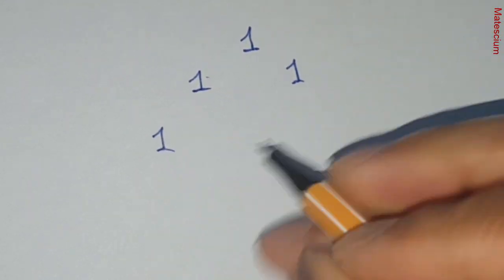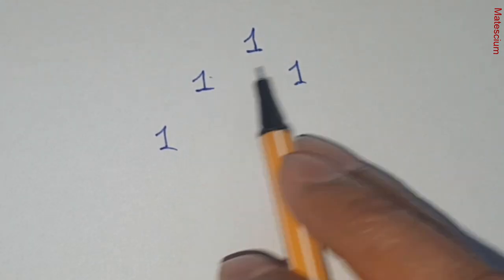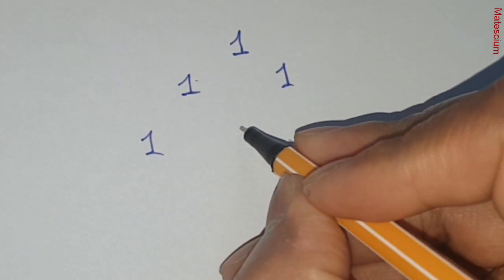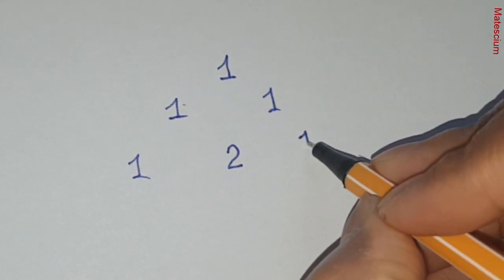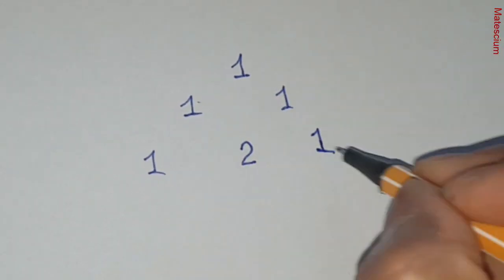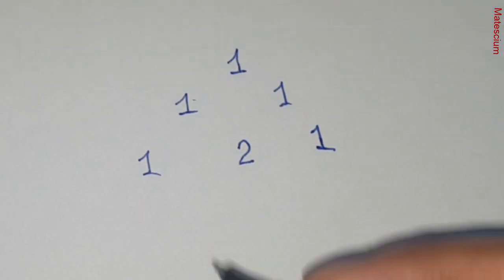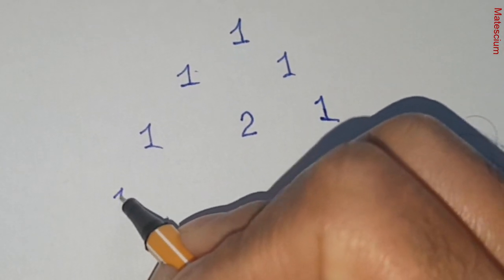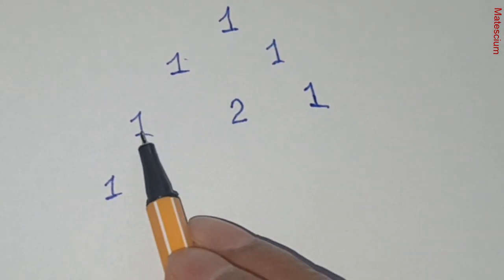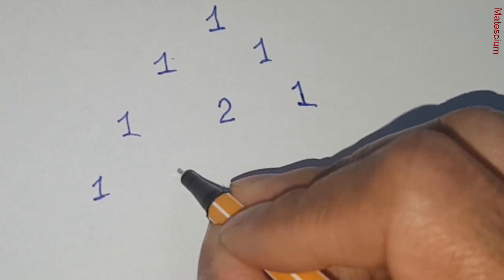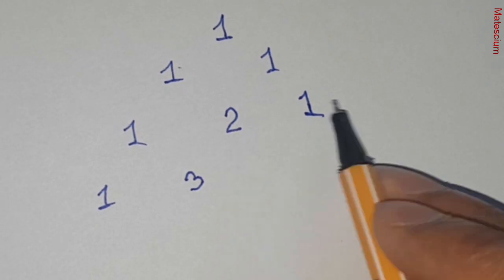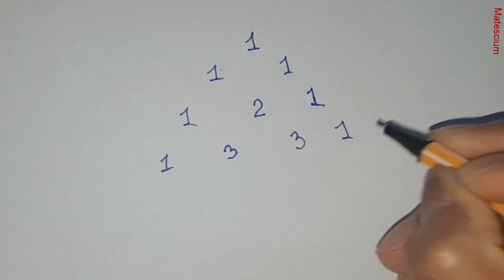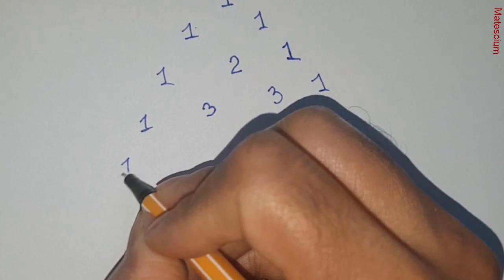Write another one here and add these two numbers. One plus one is two and write that two in between those two numbers a little bit below. And another one is here. Now the triangle is getting bigger, right? Okay. Let's expand it more and more. So I'm writing another one here and this one plus two is three, write this three in between these two numbers a little bit below. Then two plus one is also three and this one is here.